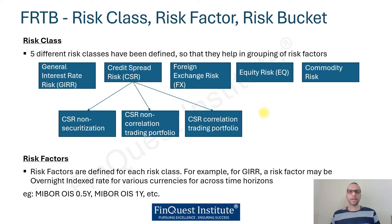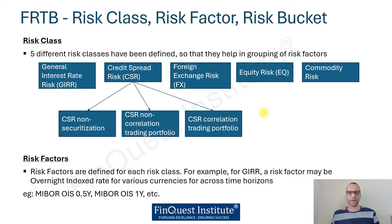MIBOR is a popular benchmark used in the Indian markets. The MIBOR OIS curve is a long curve spread across multiple tenors, similar to any other swaps curve existing in global markets. For example, we can have a MIBOR OIS for a tenor of 0.5 years, then one year, and so on, stretching right up to 30 years. Each of these points is individually classified as a risk factor specific to GIRR.